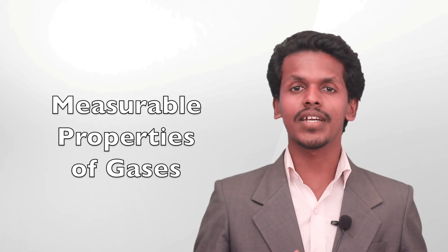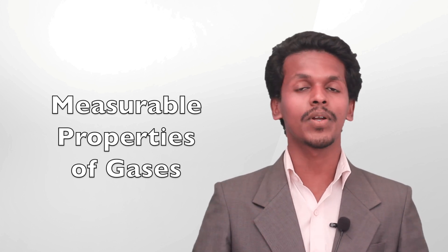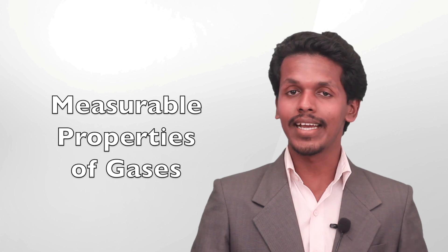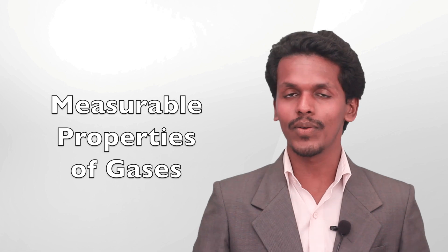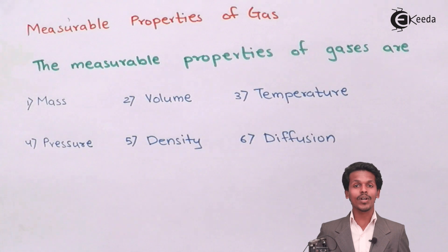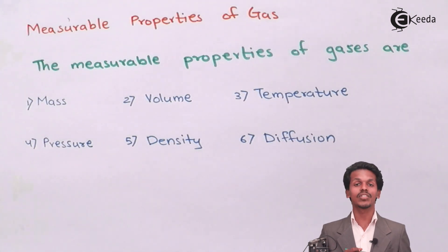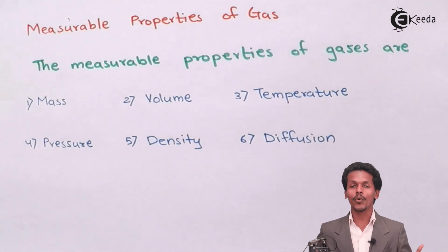Hello friends. In the last lecture we studied that there are three types of matter: solid, liquid, and gas. Now we are purposely talking about the gaseous state only. So let us see what are the measurable properties of a particular gas. Gas is something which has no intermolecular force of attraction, or they have less intermolecular force of attraction, because of which we are going to learn a few properties which are based on gases only.